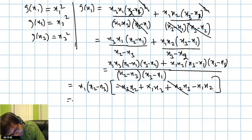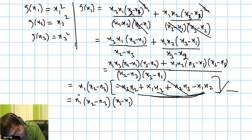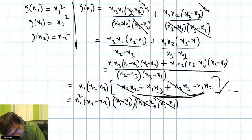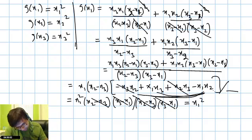We have x1·(x2 - x3) in the numerator. Taking x3 common from the first group gives (x3 - x2); taking x2 common and looking at the denominator (x2 - x3)·(x3 - x1), the factor (x3 - x1) cancels out and (x3 - x2) cancels with (x2 - x3). The simplified form is x1². So there are many steps to show that G(x1) = x1².